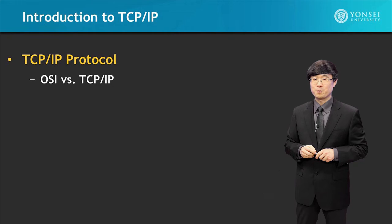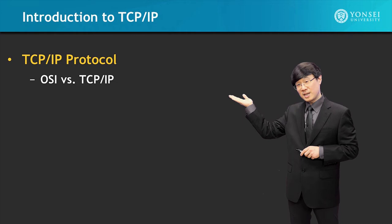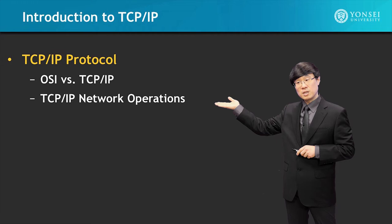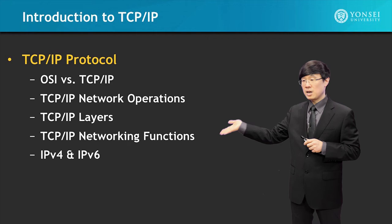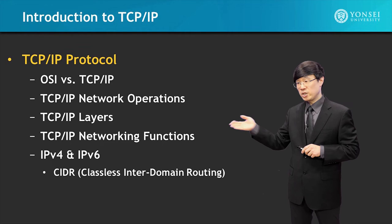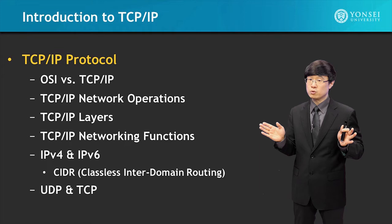In the TCP/IP Protocol lecture, we're going to study about the OSI 7-layer model and the TCP/IP 5-layer model. Also, network operations and the TCP/IP layers — what and how do they work, and what are their networking functions? We'll also study details on IPv4 and IPv6, which include the CIDR notation, which is Classless Inter-Domain Routing. In addition, we'll study the protocol structure of UDP and TCP.